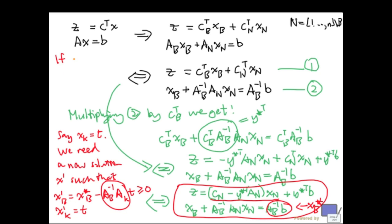Now, notice the following. If A sub B inverse A K is non-positive, then T can be increased indefinitely. And, what does this mean? That means that the problem is unbounded. So, this is where we can recognize unboundedness.